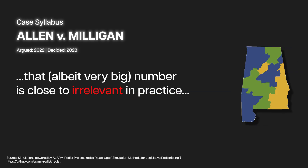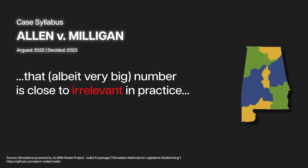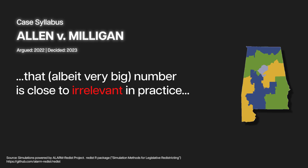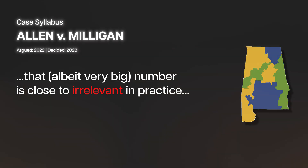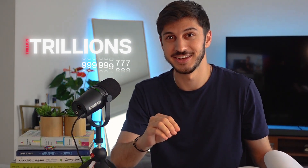the court's decision says that the two million map samples, though a very big sample, are immaterial because the actual number of possible Alabaman maps is unknown. But according to experts in the case, it is in the trillion trillions — a number bigger than we can comprehend.